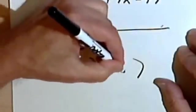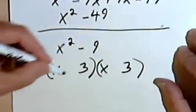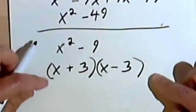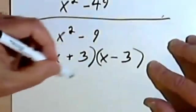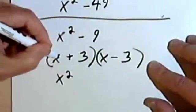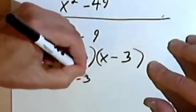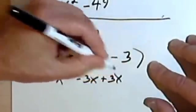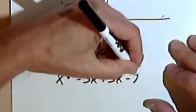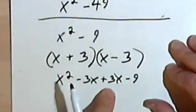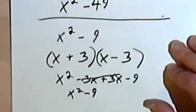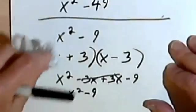all we have to do is take the square root of the second term, put a 3 here and a 3 here, make one of these positive and one of them negative. And we can multiply it back just to make sure we're right. So x times x is x squared, x times negative 3 is negative 3x, 3 times x is positive 3x, 3 times negative 3 is negative 9, and you can see already that these two are going to cancel, and we'll get x squared minus 9. Let's try a couple more.